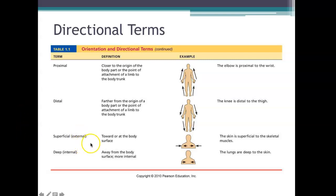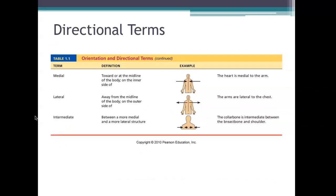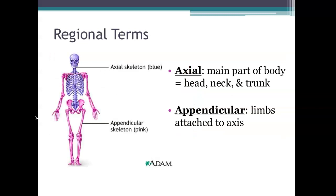Superficial means towards the outside of the body — your skin is superficial to your skeleton or muscles. Deep means away from the surface — the lungs are deep to the skin. For example, a doctor describing a brain aneurysm would say it occurred in the anterior part of the brain rather than saying the front, to ensure very specific communication with no confusion.